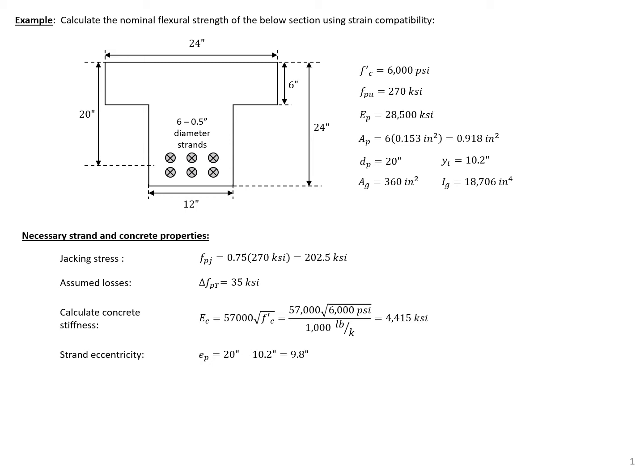You can see it's a T-beam section with six half-inch diameter strands, and some of the material and section properties that we'll need in this example are summarized here. Our jacking stress, we're going to assume a standard jacking stress equal to 75% of the ultimate strength, so 202.5 KSI.